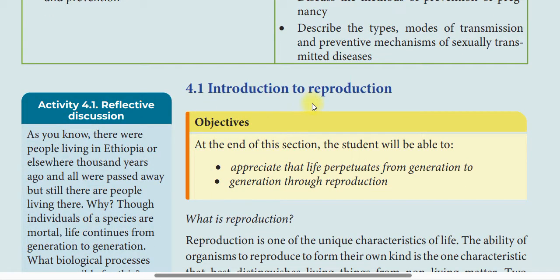Introduction to Reproduction. Reproduction is very important. There are 7 basic characteristics of life: Reproduction, Movement, Sensitivity, Nutrition, Growth, and others. These are life characteristics. Reproduction is one of the unique characteristics of life.